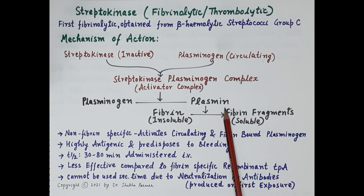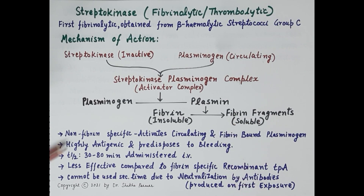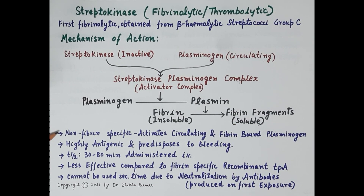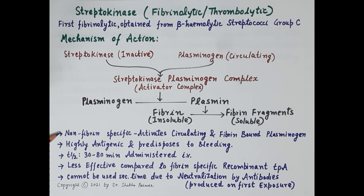The active plasmin breaks the insoluble fibrin network, causing dissolution of the clot. One major disadvantage of streptokinase is its non-fibrin specificity. Unlike tissue plasminogen activator, which activates only fibrin-bound plasminogen, streptokinase activates both circulating plasminogen and plasminogen bound to fibrin. Since it also activates circulating plasminogen, streptokinase predisposes to bleeding and carries a high risk of bleeding.